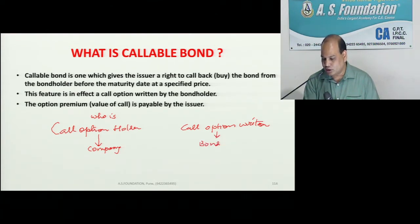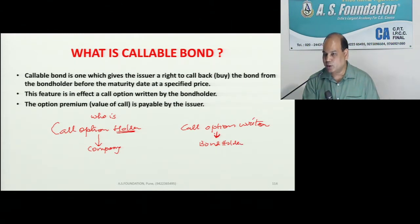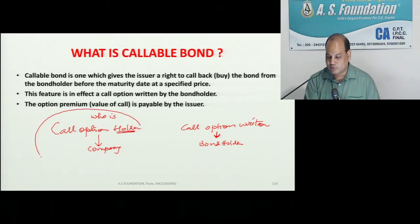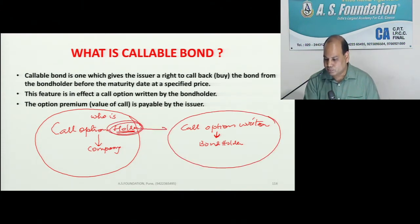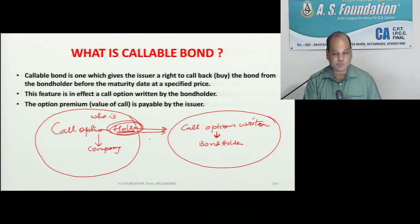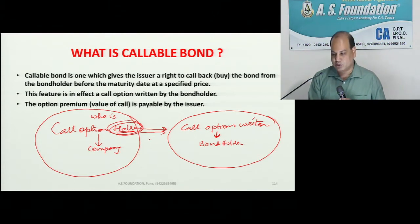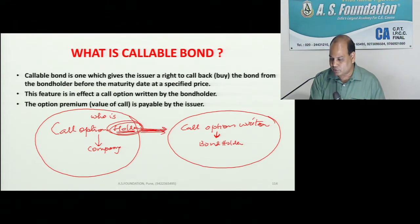Don't get confused — the company is the call option holder and the bond holder is the call option writer. So who will get premium? Going back to basics: in an option, the one who holds the option pays premium to the writer. That premium is inbuilt into the pricing of this bond.